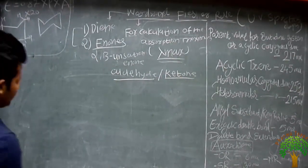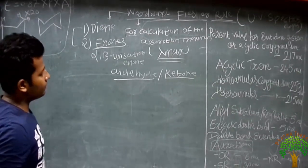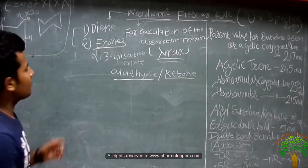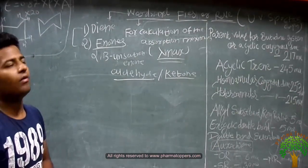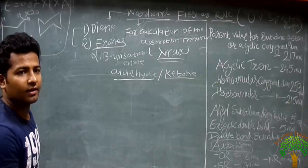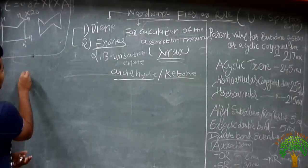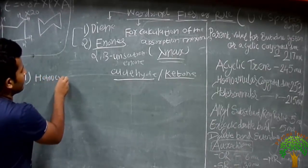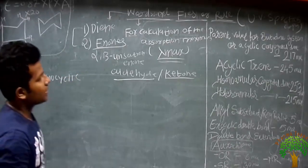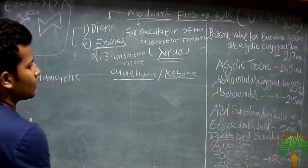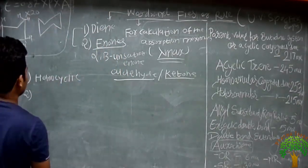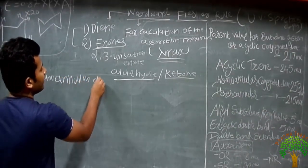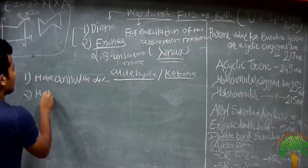First, we will discuss two things: how to calculate the lambda max of any structure. Before starting with structures, we will first cover the basic terminology of the Woodward-Fisher rule. The first important term is homoannular.